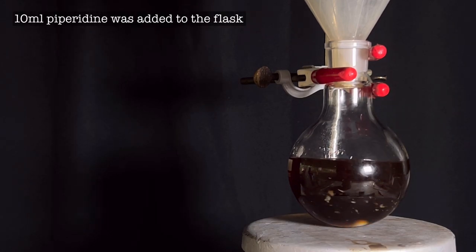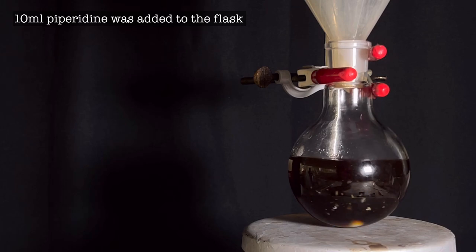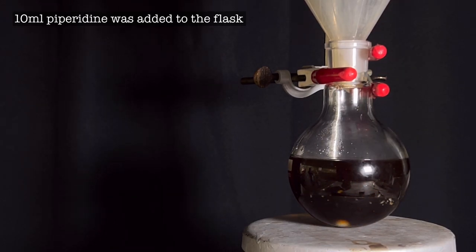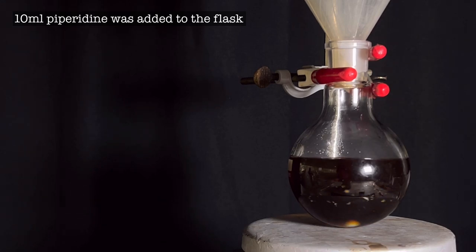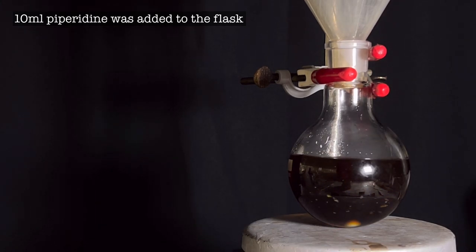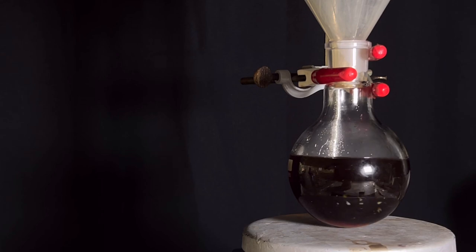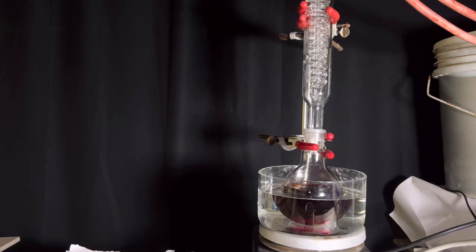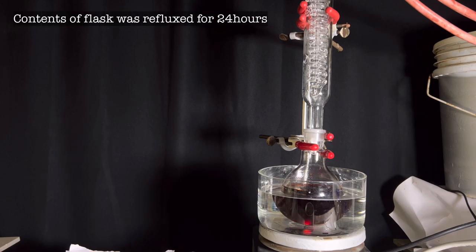Piperidine is a heterocyclic amine which is a controlled substance in many western countries. Piperidine is toxic and causes severe skin burns and eye damage. Piperidine was added in small portions at a time. Then the flask was placed in a water bath and a dimroth condenser was attached on top. The contents of the round bottom flask was then refluxed for 24 hours.